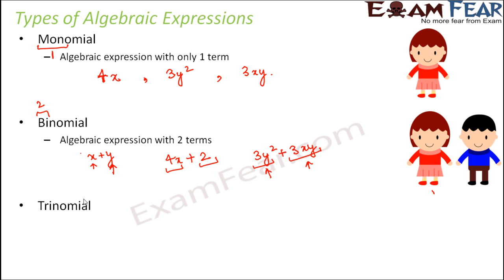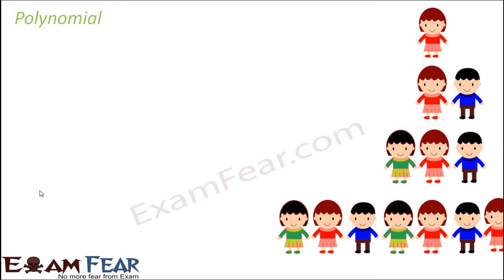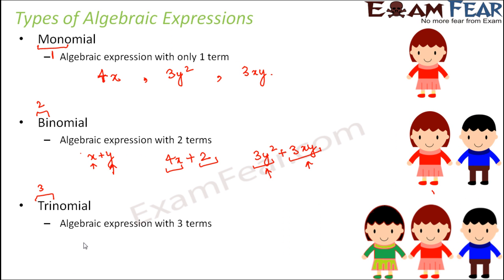So I hope you would have guessed by now what is trinomial. Tri means 3. So an expression with three terms is a trinomial. So examples of trinomial would be something like a plus b plus 1. So here you have three terms, a, b and 1.